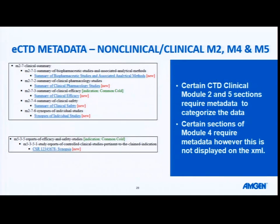In the clinical area, the key information we use for metadata is around your indication. A number of your drugs that you're registering refer to more than one indication. By using some metadata here, you're allowed to have two separate 5.3.5 sections. This allows you to group your clinical information to a specific indication. Some dossiers are so large that the more you can use this metadata to group things together, the easier it makes it for everyone to navigate your submission in the long term. And as a reminder, the metadata is the green text on screen. There is technically some metadata in module 4, but it doesn't actually display on the XML — it's usually entered by your publishing team based on advice from the non-clinical team.